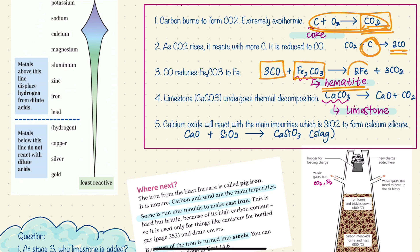From the reaction of carbon monoxide with hematite, you get iron and carbon dioxide. Another raw material added into the blast furnace is limestone. Limestone undergoes thermal decomposition, breaking down to form calcium oxide and carbon dioxide.